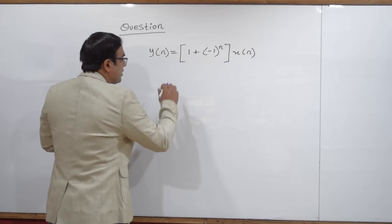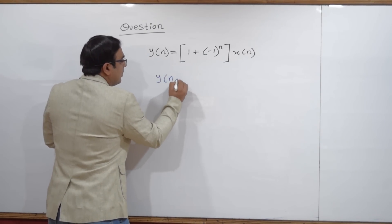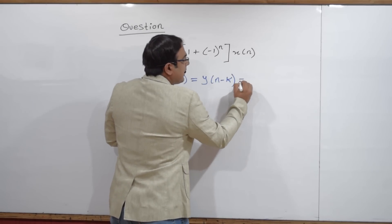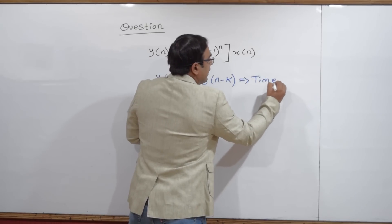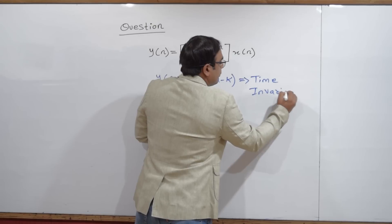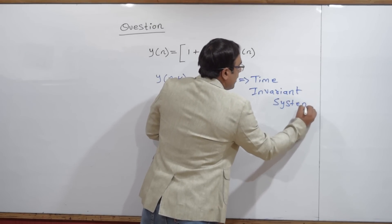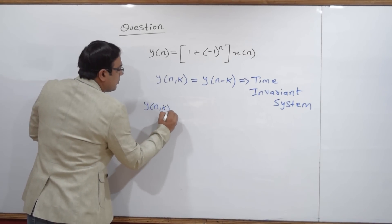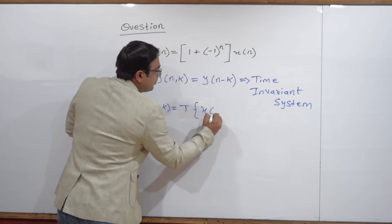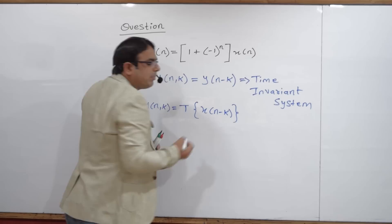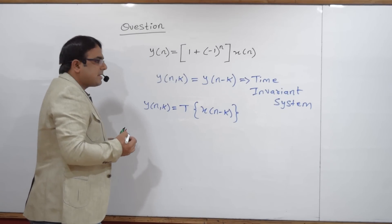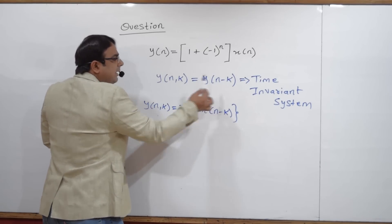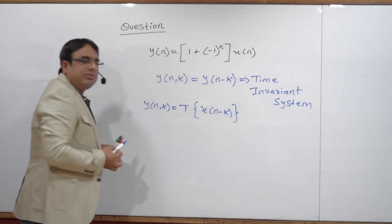The definition of a time variant system: y(n, k) is equal to y(n − k). If this equation is satisfied, then this is called a time invariant system. y(n, k) is nothing but the transformed form of the delayed input — if I provide delay in the input, what will be the output of my system? If the delayed version of the input applied to the system gives the delayed output, then I can say this is a time invariant system.